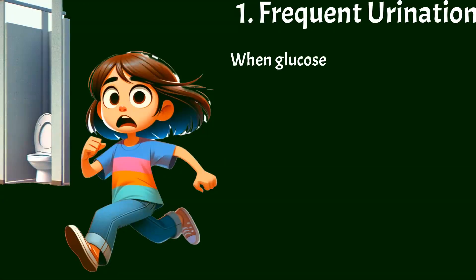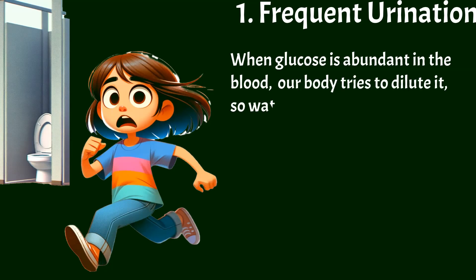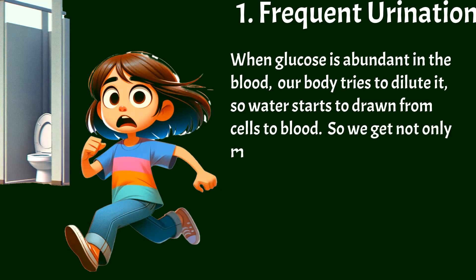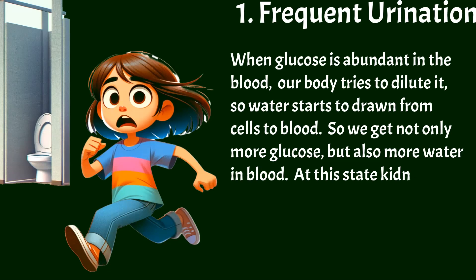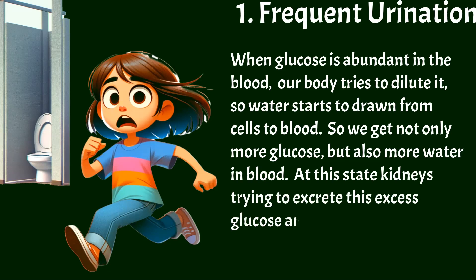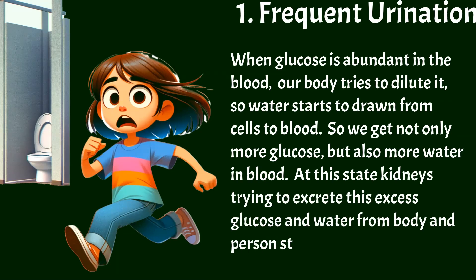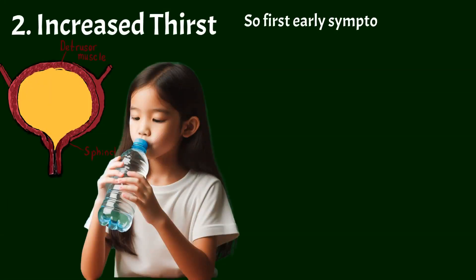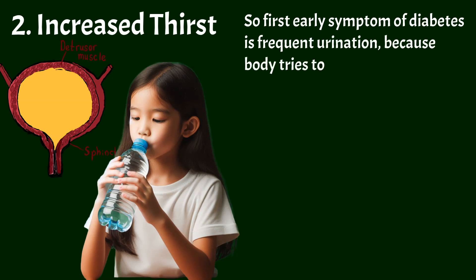When glucose is abundant in the blood, our body tries to dilute it, so water starts to be drawn from cells into the blood. This gives us not only more glucose but also more water in the blood. The kidneys then try to excrete this excess glucose and water from the body, and the person starts experiencing frequent urination — the first early symptom of diabetes.